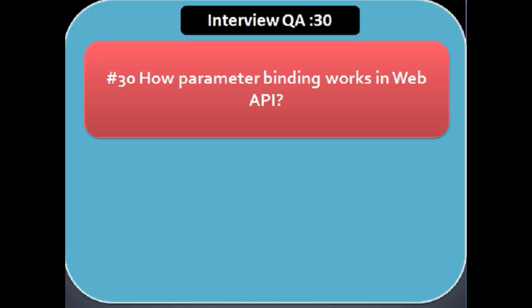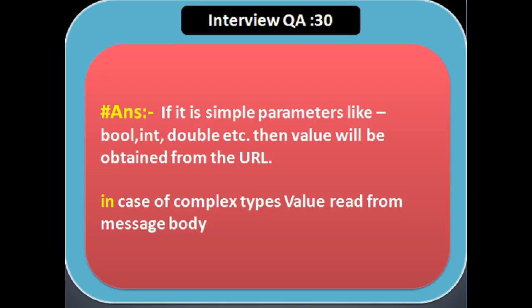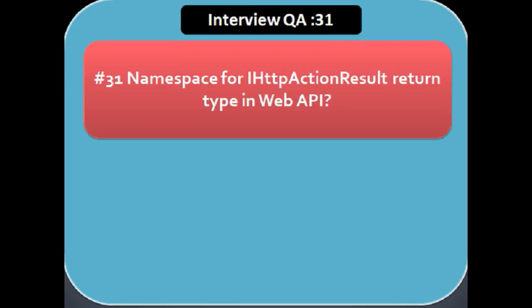Next question: how does parameter binding work in Web API? The rules followed by Web API before binding parameters are: if it is a simple parameter like bool, int, or double, the value will be obtained from the URL. But in case of a complex type value, it reads from the message body.